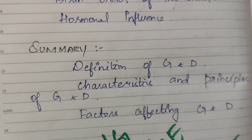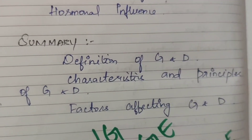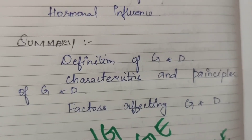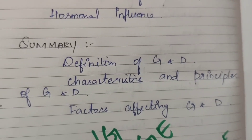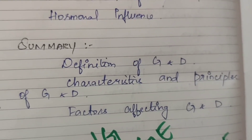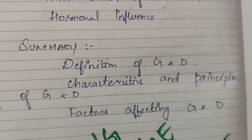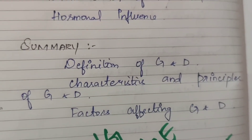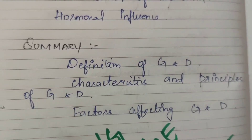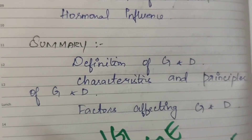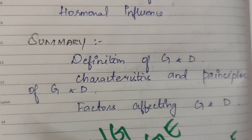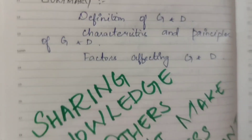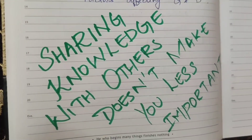So far we have seen: the definition of growth and development, characteristics of growth and development, principles of growth and development, factors influencing growth and development — including prenatal factors, postnatal factors, maternal factors, and child factors. Thank you.